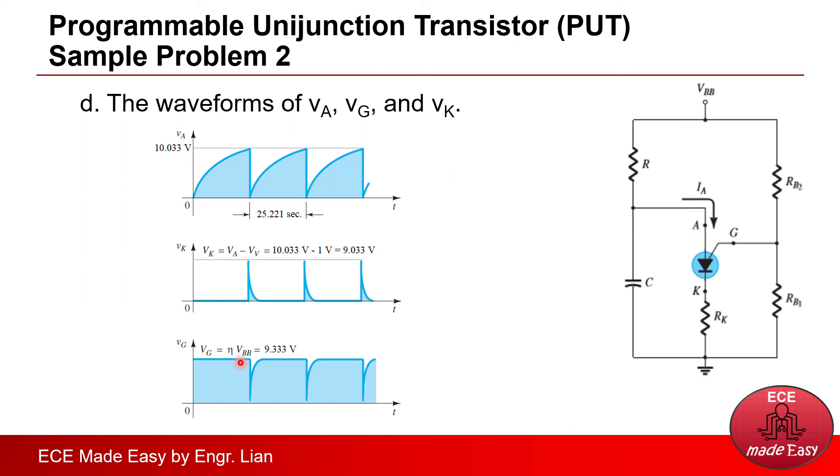and that's actually equal to 9.333 volts. And when the PUT turns on, there will be an equivalent degrade or reduction of the current because that will flow through RK. That's why there is a drop in the voltage here.